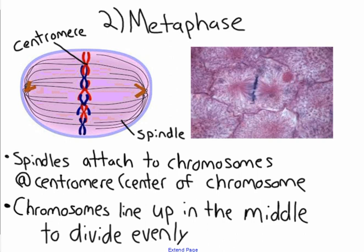Metaphase is the next step. The way I want you to think about centrioles — the proteins on the end — and spindles is like a cowboy with their lasso or rope. The centrioles are the cowboy and the spindles are the rope. There are two cowboys on each end and they throw their rope around the centromere, which is the center of the chromosome, and then they pull on the chromosomes. So in metaphase: spindles attach to the chromosomes, the chromosomes line up in the middle of the cell, and the spindles begin to pull. They line up in the middle so the chromosomes divide evenly.